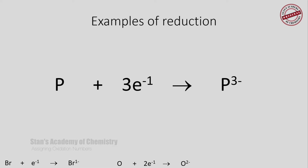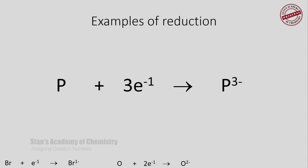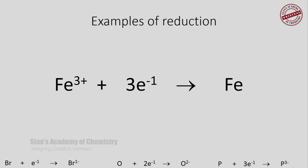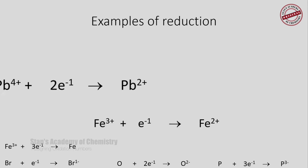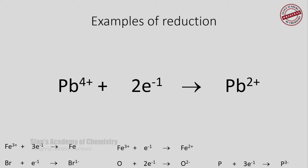Phosphorus gains 3 moles of electrons and changes into a phosphide ion. The oxidation number changes from 0 to -3 — a decrease in oxidation number — hence it is a reduction. The ferric ion gains 3 moles of electrons and changes into a neutral iron atom. The oxidation number changes from +3 to 0, hence the process is reduction. If Fe³⁺ gains 1 mole of electrons and changes into a ferrous ion, there is a decrease in oxidation number from +3 to +2 — reduction. Lead(IV), Pb⁴⁺, can gain 2 moles of electrons and change into Pb²⁺, so the oxidation number changes from +4 to +2 — again, reduction. These are some examples of reduction.